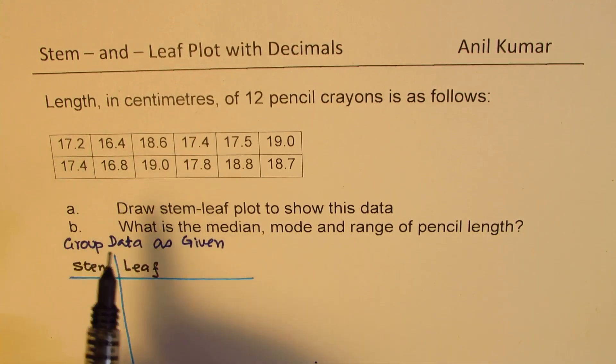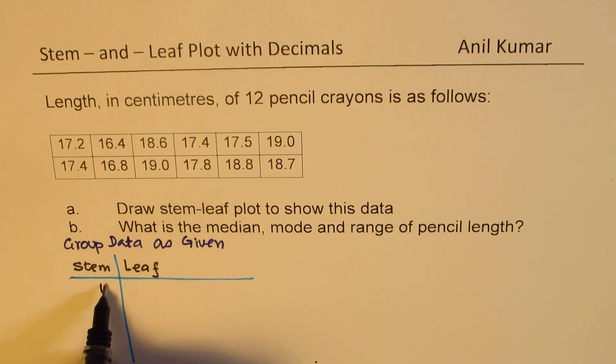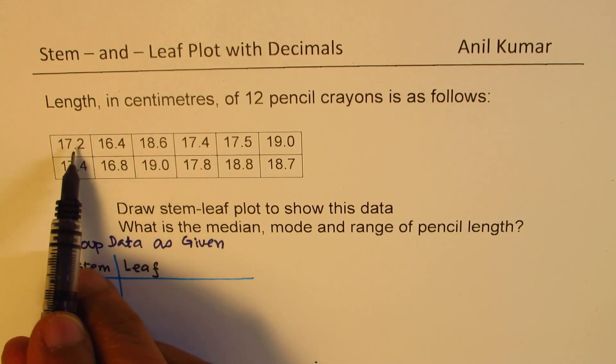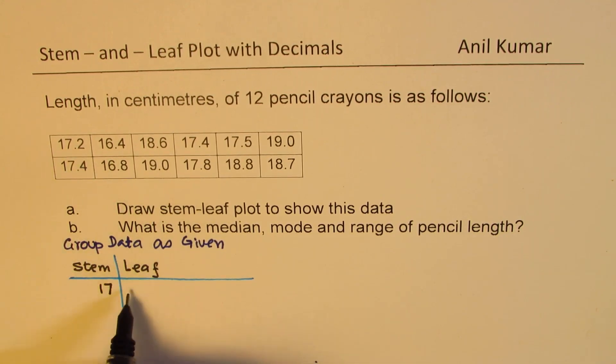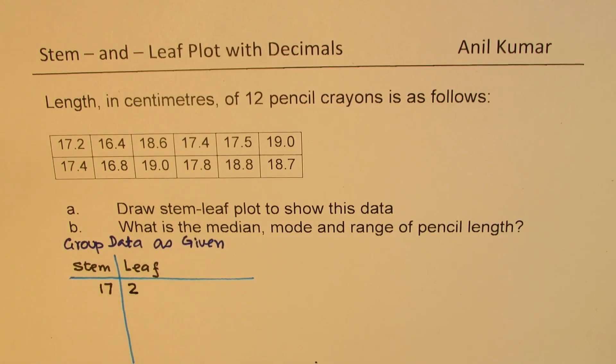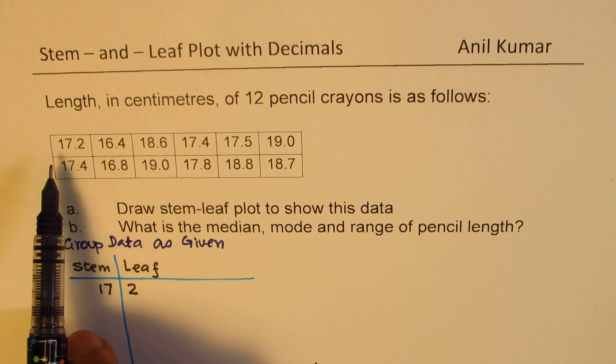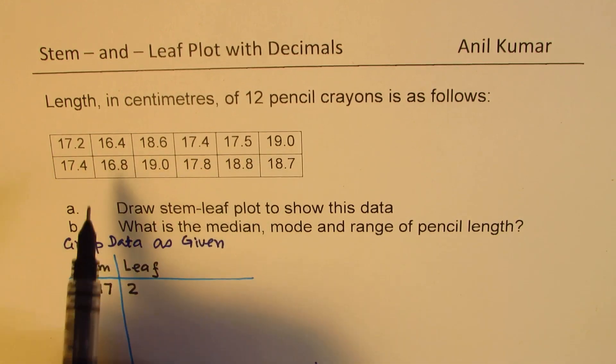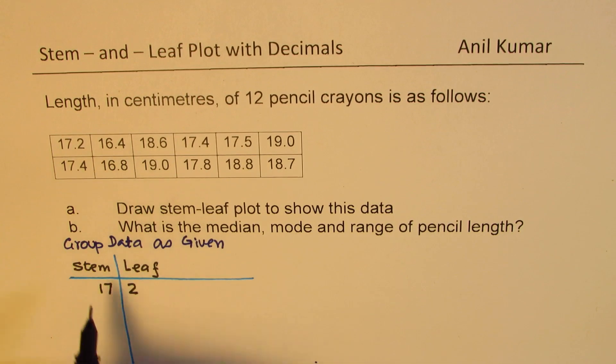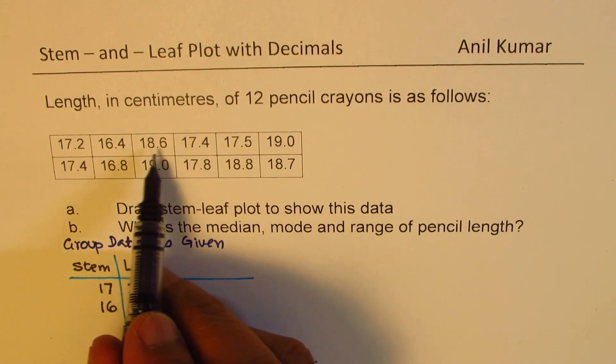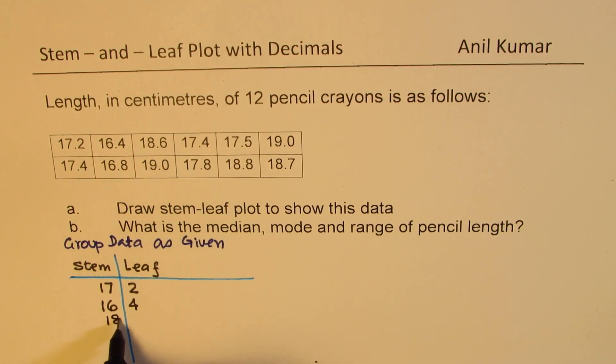So 17.2 - 17 will come here and then 2 will go to the leaf part. So what we are actually doing here is we are trying to place all these values in the order given. Second is 16.4, so I'm placing 16 here and 4 in the leaf part. Then we have 18.6.